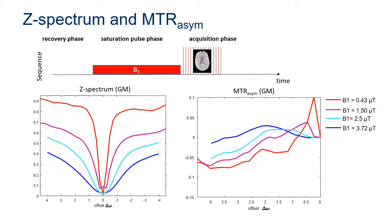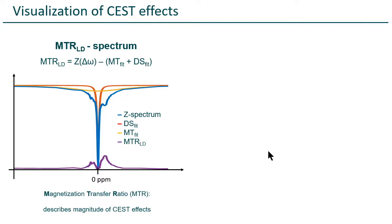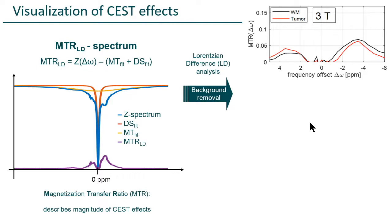To isolate all these effects, we cannot just do asymmetry because it's a mixed contrast. What we try to do — and also already try to put into OLEA — is to use a Lorentzian difference. We just fit the direct water saturation but also the semi-solid MT line and remove that from all these endogenous CEST effects. We call this — similar to Silvio's saturation transfer — magnetization transfer ratio, and this is actually the Lorentzian difference. We can remove the background and get both sides of the spectrum isolated. At 3T low power, we get some selectivity: NOE effects on one side and more amine effects on the other.